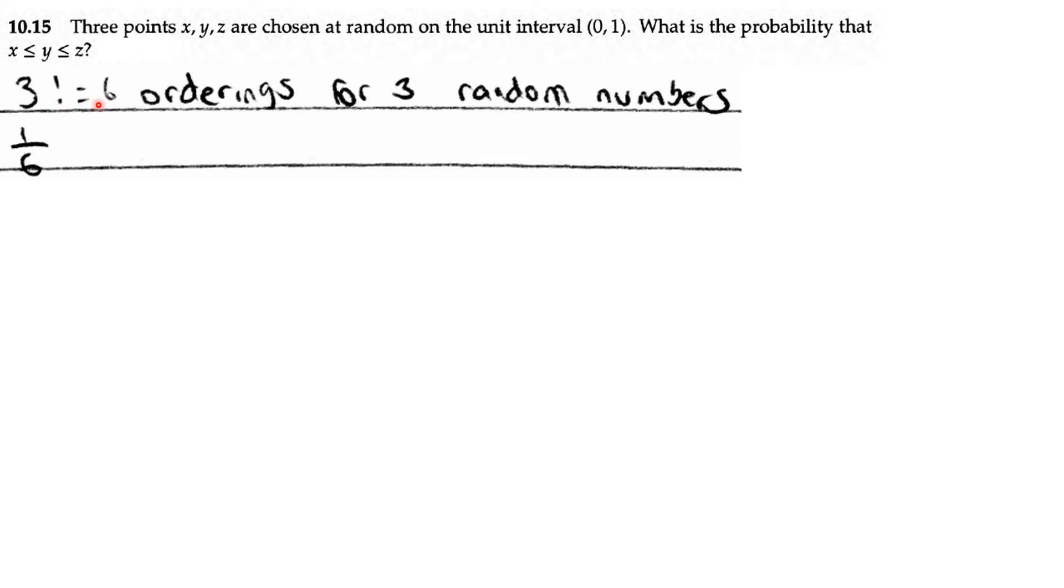So in total, there's 3 factorial, which is 6 orderings for 3 random numbers. So the probability of this order, this specific order, is 1/6.